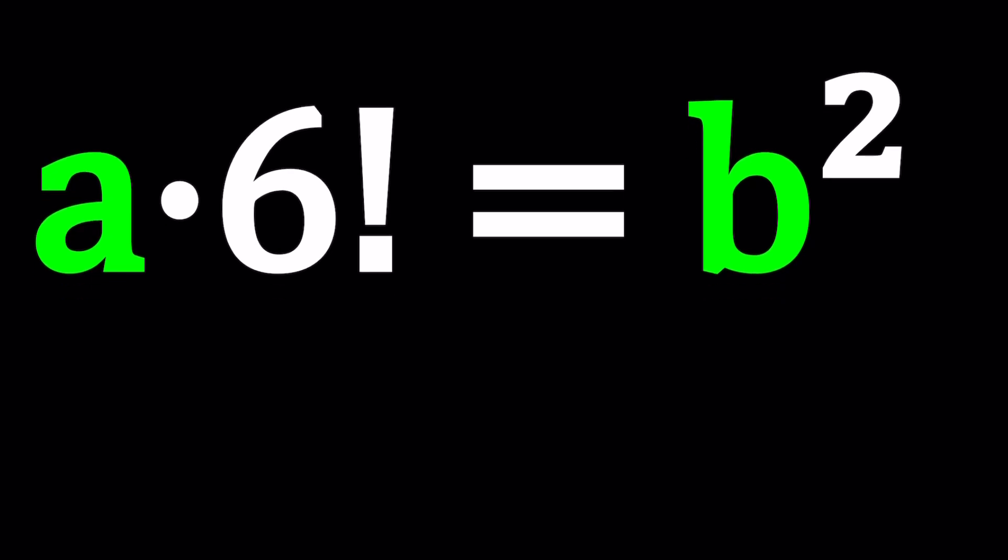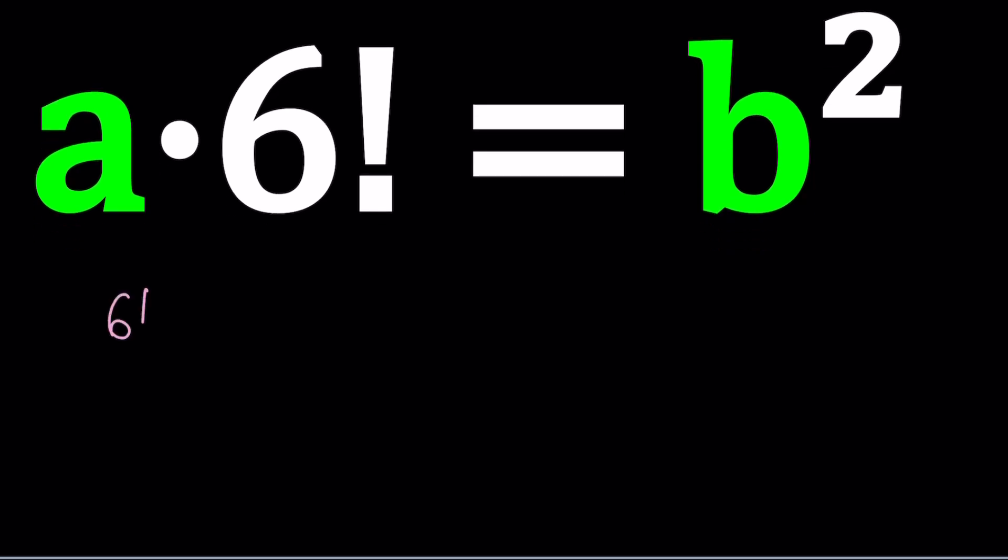6 factorial, you should probably memorize this or maybe you already did. It's 720. But let's go ahead and find out why that's the case. 6 factorial is basically 6 times 5 times 4 times 3 times 2 times 1. And if you multiply all these numbers together, 6 times 5 is 30, 30 times 4 is 120, then 360, then 720.